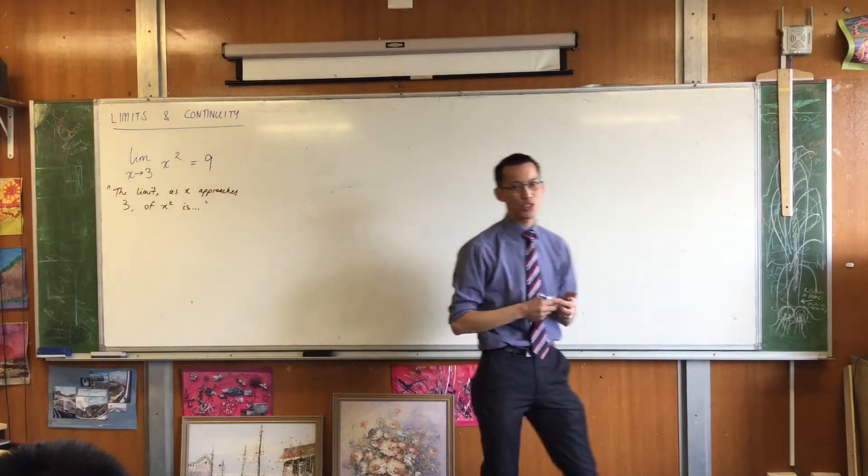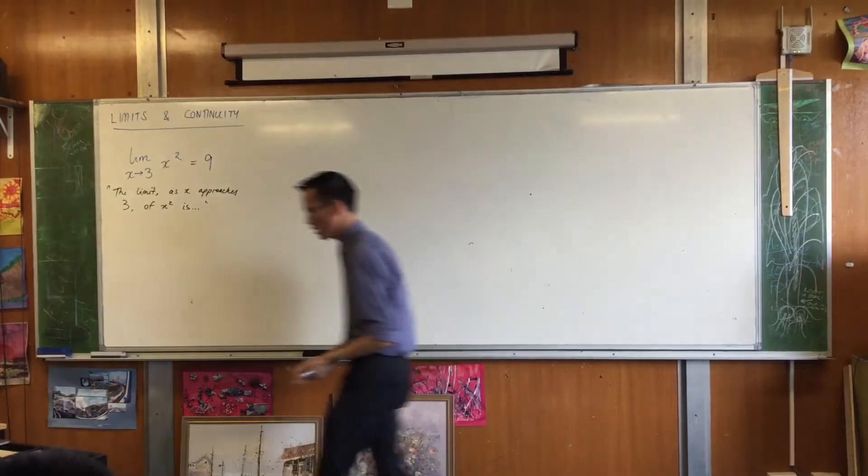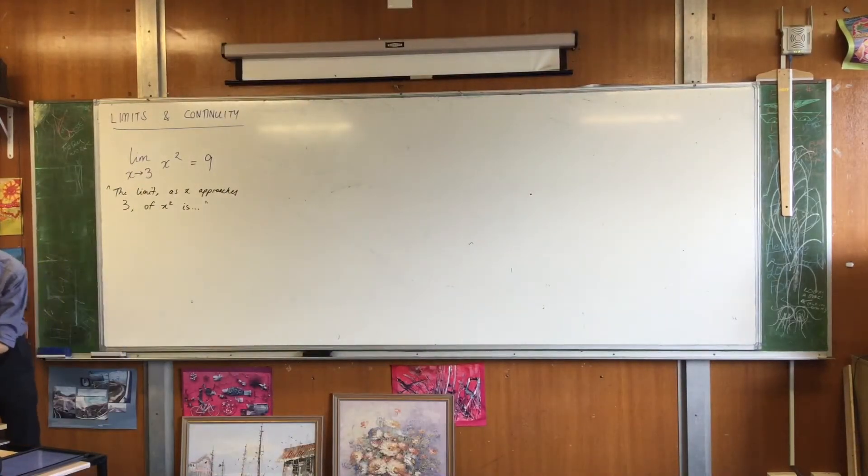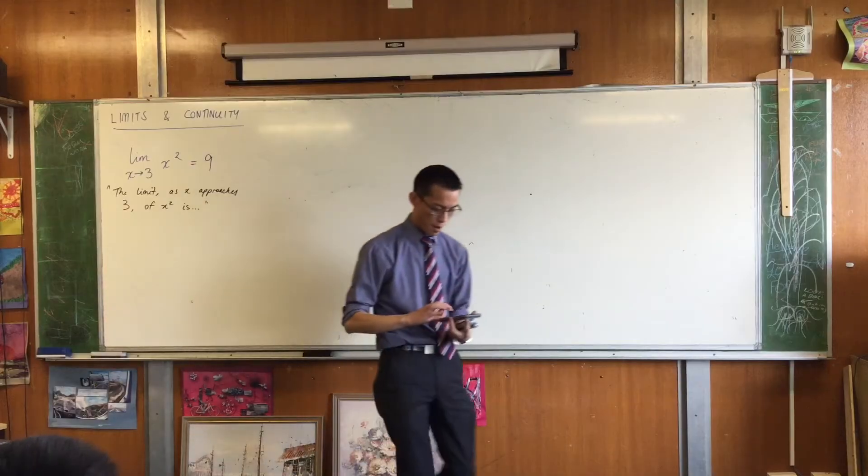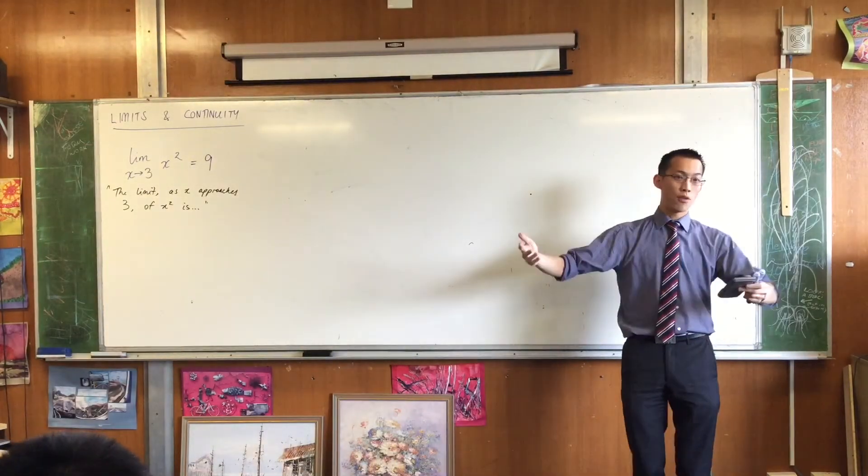So as the x values change, for example, if I'm going to get my calculator here, if x were 2.9, that's a number that's close to three. I don't know what 2.9 squared is, but I'm about to find out. 2.9 squared is 8.41.